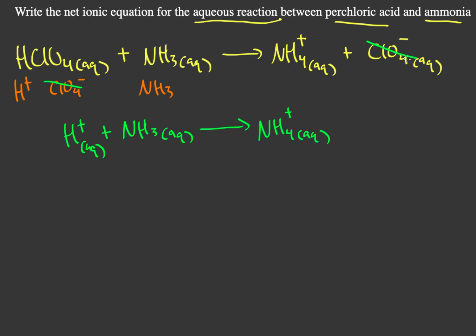And ClO4 minus here is cancelled out with the ClO4 minus existing in the reactants, since this is a strong acid. So this is your net ionic equation.